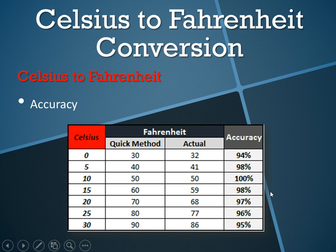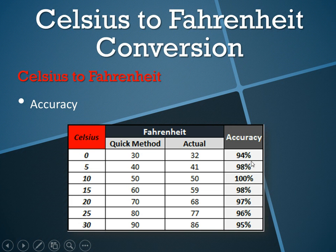To demonstrate the accuracy, I have a table here with various Celsius readings. You have the quick method — times 2, plus 30 — and then you have the actual conversion. The further away from 10 degrees Celsius you become, the less accurate it is, but it's still in the 90s.